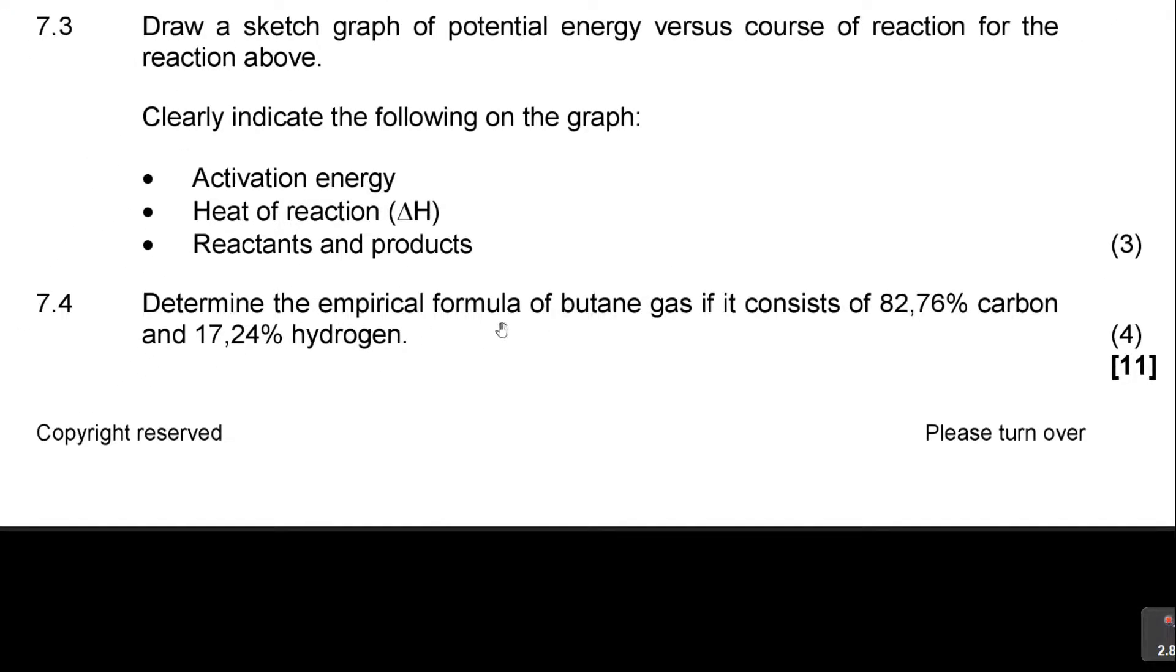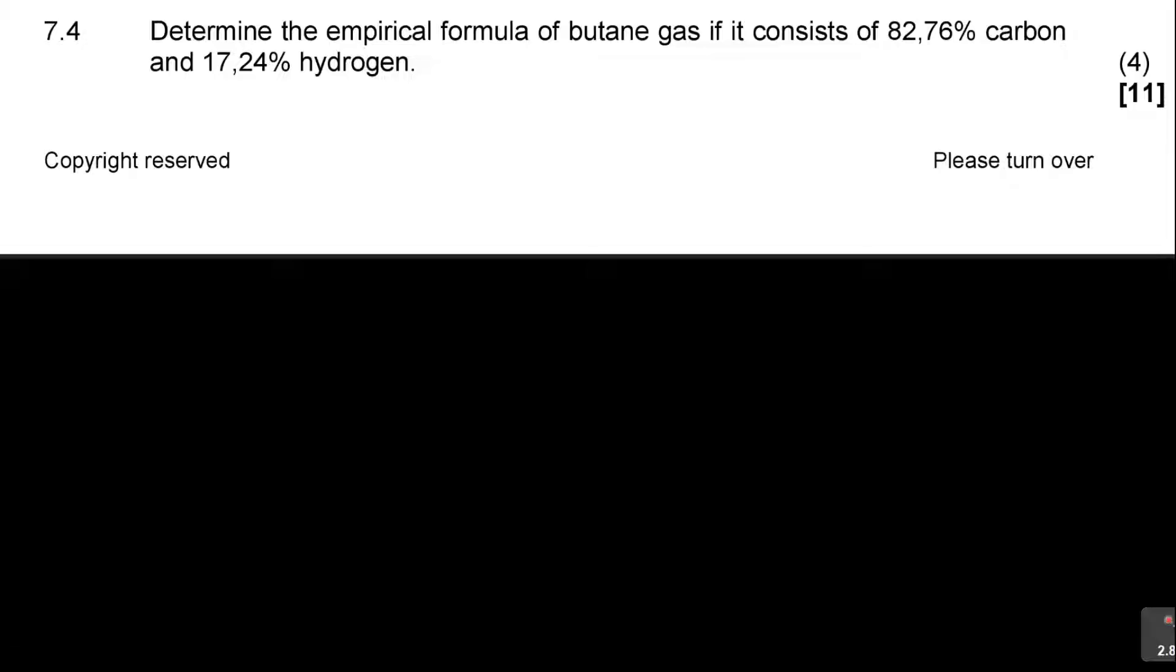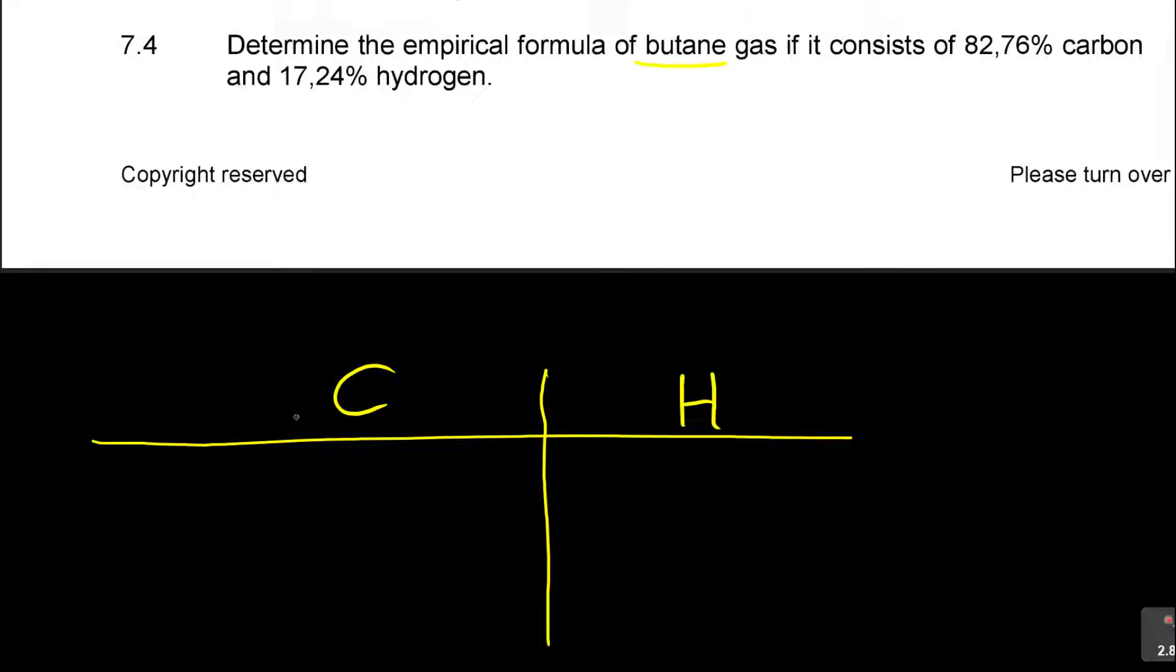Now the four marks says determine the empirical formula of butane gas if it consists of this of carbon and that of hydrogen. Now empirical formula also is very important for you to know how you calculate it. But let's go about it. Butane is made up of carbon C and hydrogen H.